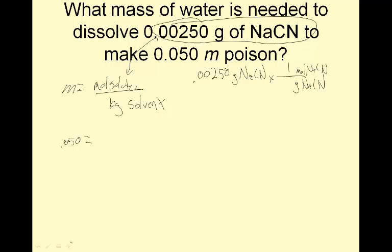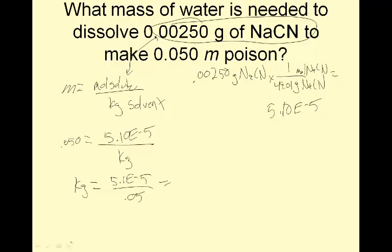0.00250 grams of NaCN times the adding bar. Goodbye, grams of NaCN. Hello, moles of NaCN. Little g means grams, which means go to the correct table. Sodium, 22.99, plus carbon, 12.01, plus nitrogen, 14.01. Altogether, it's 49.01. And then this will give me 0.0025 divided by 49.01 is 5.10E-5.